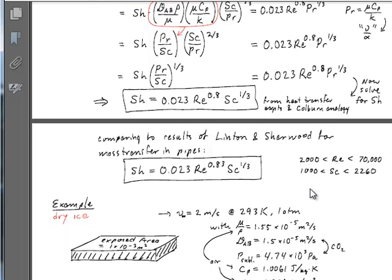Separate experiments have been done by Linton and Sherwood looking at mass transfer in pipes, this exact situation. What they found in their experiments was that the Sherwood number is 0.023 Reynolds to the 0.83, Schmidt to the one-third. Not bad.